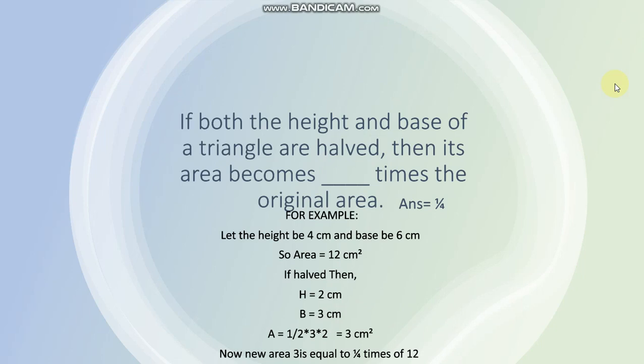Agar ham in ko half karna hai, height ko 2 or base ko 3 karna hai, half karna hai, toh kya ho jayega new area? Half into 3 into 2, that is 3 cm square. Ab yeh naya area 3 cm square, kitnay times ho ga 12 ke? Yeh hoga 1 by 4 times of 12, means 1 by 4 multiplied by 12 is equal to 3.